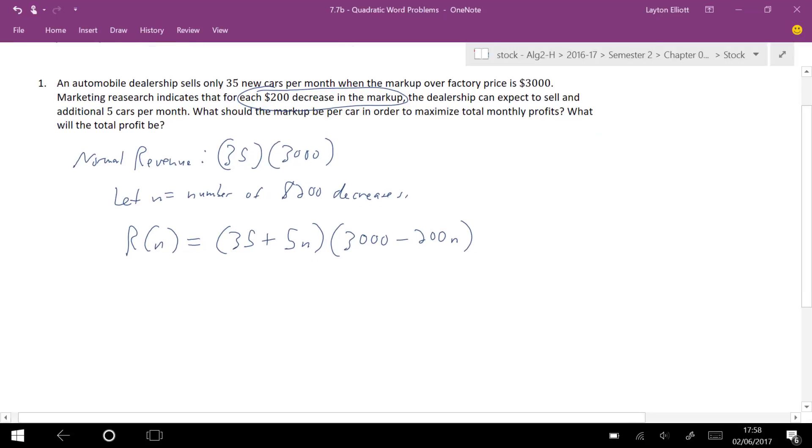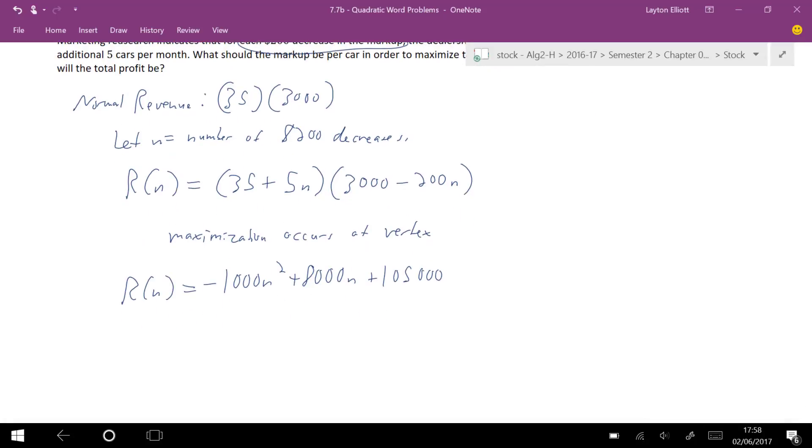And like I'm going to constantly say, maximization and minimization occurs at the vertex. This is a parabola. If I multiply it all out, I get negative 1,000 N squared. That would be minus 7,000 plus 1,500, so minus 8,000 N, sorry, plus 8,000 N, and then plus 105,000.